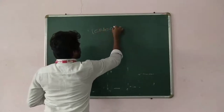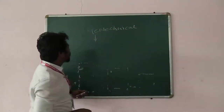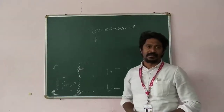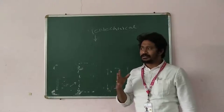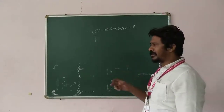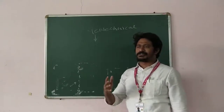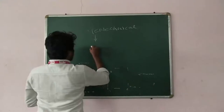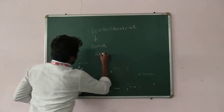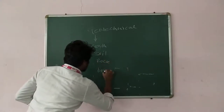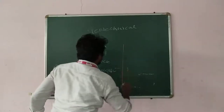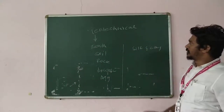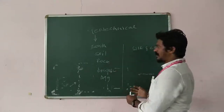In geotechnical engineering, 'geo' means earth-related materials. So what are the earth-related materials? These are construction materials we use for buildings, bridges, dams, reservoirs, and many types of structures. In the earth, we study soil, rocks, boulders, aggregates, silt, and clay — all these different types of materials available on the earth.